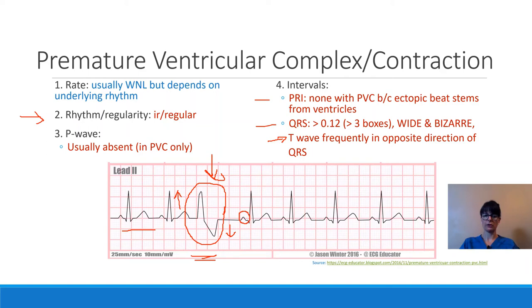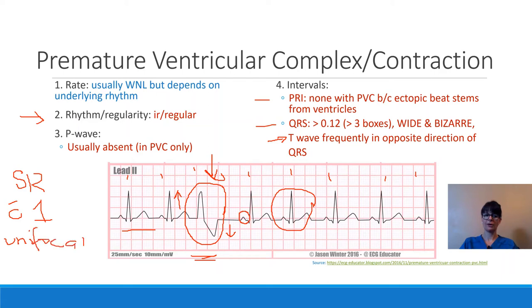PVCs always have an underlying rhythm. In this example, analyzing the regular-looking beats, they appear sinus. Counting the beats over the six-second strip gives a rate of about 80. So this would be interpreted as a sinus rhythm with one unifocal PVC. We wouldn't call it a normal sinus rhythm because the PVC isn't supposed to be there — whenever there is an abnormal beat within a sinus rhythm, we no longer call it normal.